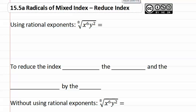15.5a Radicals of Mixed Index - Reduce Index. If we were to reduce the index using rational exponents, we could turn this into x to the six-eighths, y to the two-eighths, and then reduce each of these fractions to give us x to the three-fourths and y to the one-fourth.